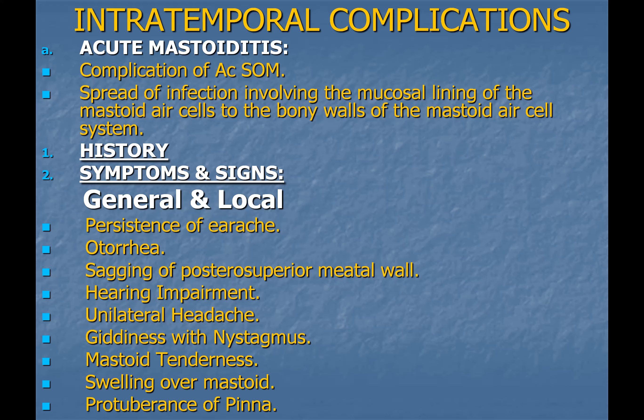On examination, mastoid tenderness can be elicited. The patient will have ear discharge, and there may be sagging of the posterosuperior meatal wall due to periostitis of the bony party wall between the antrum and the deeper posterosuperior part of the bony canal. There will be perforation of the tympanic membrane, swelling over the mastoid, and conductive hearing loss. Investigations include ear swab for culture and sensitivity, complete blood count with ESR, and mastoid X-ray or CT scan of the temporal bone.